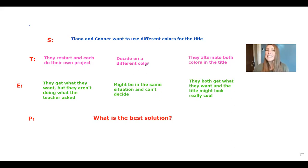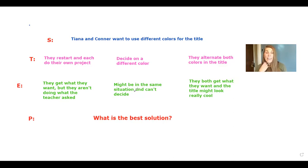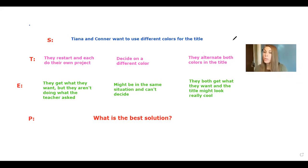Solution two: decide on a different color — no red, no green, something else. A consequence of that is they might end up in the exact same situation. Maybe Tiana wants orange and Connor wants yellow, and then they can't decide between those two, and they're back arguing again. Solution three: alternate both colors in the title — use both red and green, maybe every other letter in one of those colors. A positive consequence is they both get what they want, and the title might look pretty cool alternating red and green.